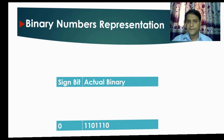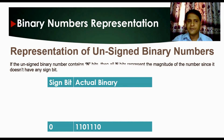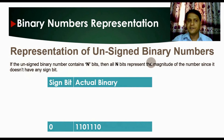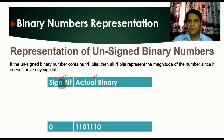Now let us see how we represent unsigned binary numbers. If an unsigned binary number contains n bits, then all n bits represent the magnitude of that number, since it does not have any sign. In the representation, the first is the sign bit and the second is the actual binary number. In an unsigned number, the sign bit is always zero, so you can ignore the sign bit and keep only the actual binary bits.